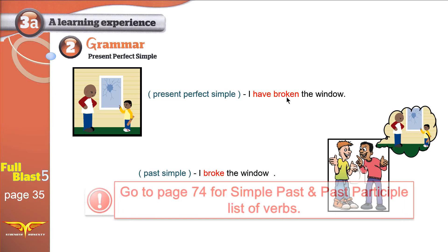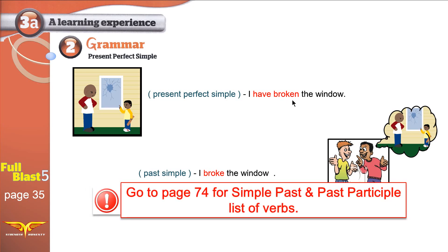For all the verbs you need to learn, go to page 74. On that page in the book, you will find the infinitive form, the simple past, and the past participle tense of all the verbs you need to learn — just like 'break.' Go to that page and check 'break' out.